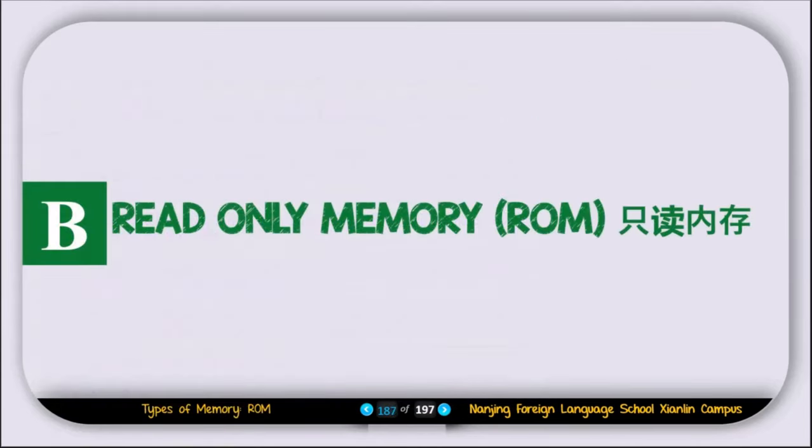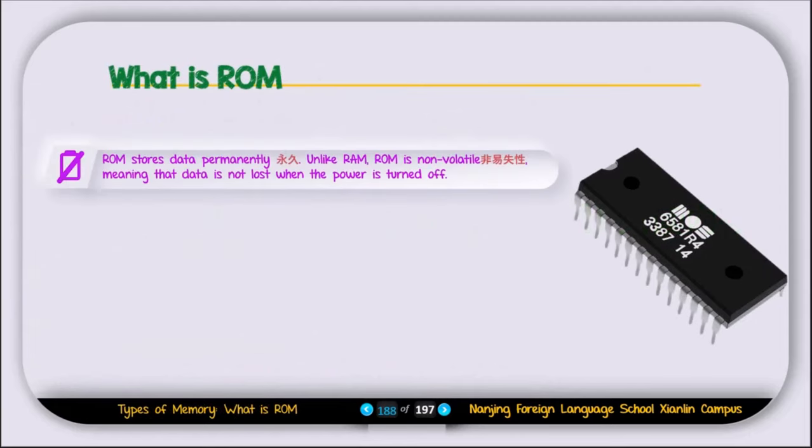Now let's discuss read-only memory or ROM. So what is ROM? ROM stores data permanently. Unlike RAM, ROM is non-volatile, meaning that data is not lost when the power is turned off. RAM is volatile memory, which means when there is no power, the data will be lost. But ROM is non-volatile, which means even if there is no power, the data stored in ROM will still remain.